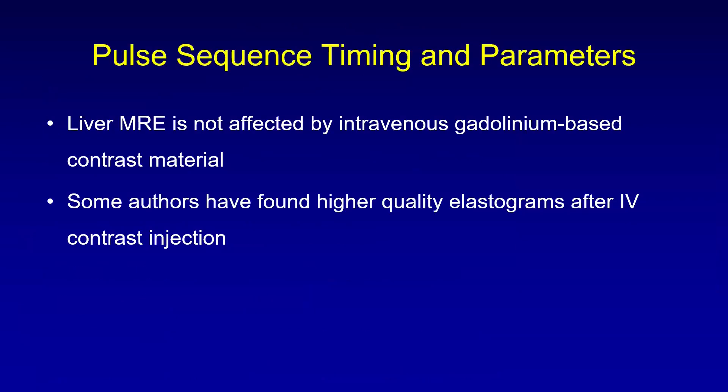When in the course of an MRI acquisition should we place our MRE sequence? Is it affected by contrast? Actually, no — it is not affected by IV gadolinium-based contrast injection. Some authors say that acquiring after IV contrast may yield better MRE values because the signal intensity of the liver increases, though how exactly it affects MRE acquisition is not clearly established. At present, you can place the MRE acquisition at any point in the timeline of your overall liver MR evaluation.